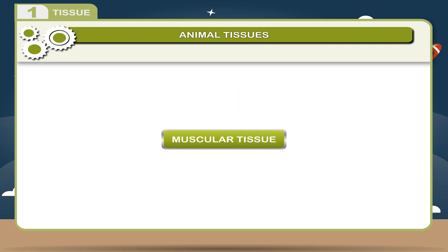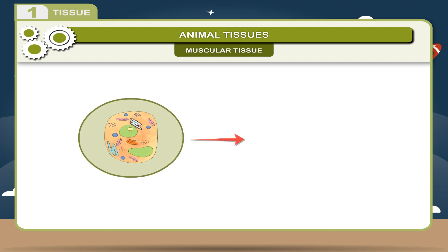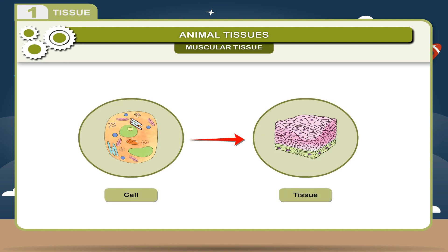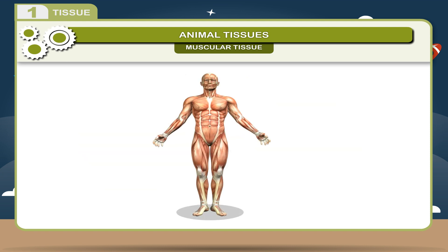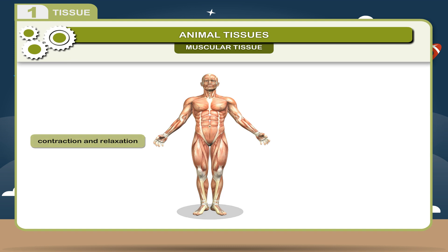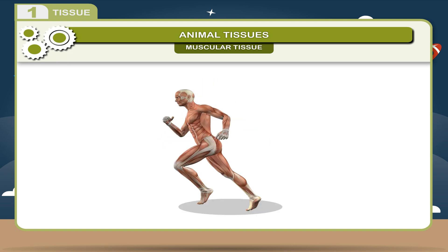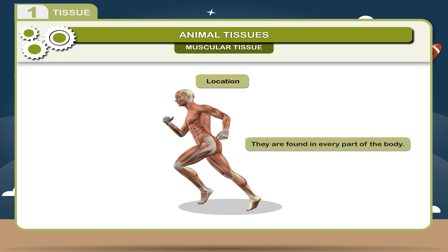Muscular Tissue: This tissue consists of bundles of cells called muscles. The muscles are specialized to undergo repeated contraction and relaxation, which are responsible for the movement of the body parts. Location: They are found in every part of the body.